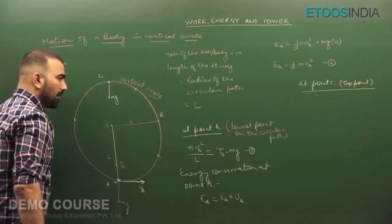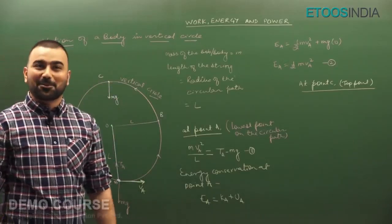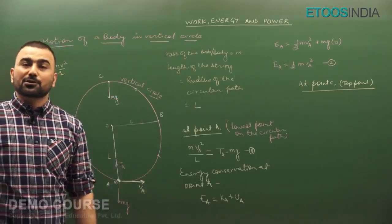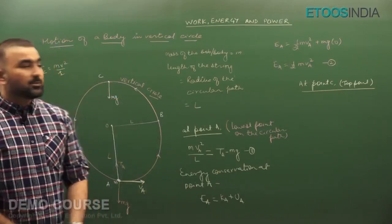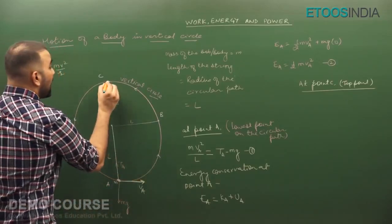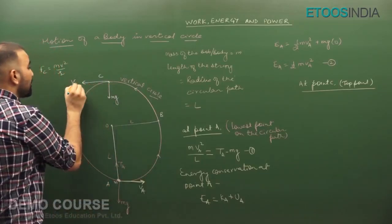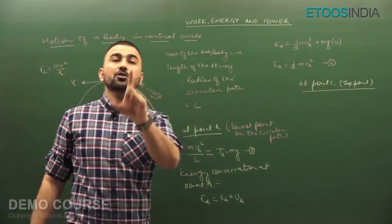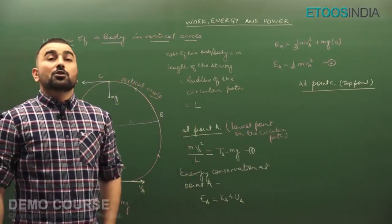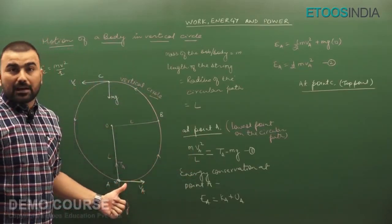Mg will act downward at the top point. Gravity always acts downward. To balance Mg at the top, we consider tension zero at point C. The velocity at the top should be in the direction of the tangent. What is the minimum value of velocity given at the lowest point so that the body traces the complete circular path?